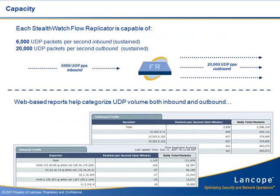Now let's talk about capacity. The StealthWatch Flow Replicator is designed to operate at high packet rates. A single Replicator supports a sustained 6,000 UDP packets per second inbound and 20,000 packets per second outbound with room to burst. Web-based reports are provided that detail the volume of UDP per source and destination.